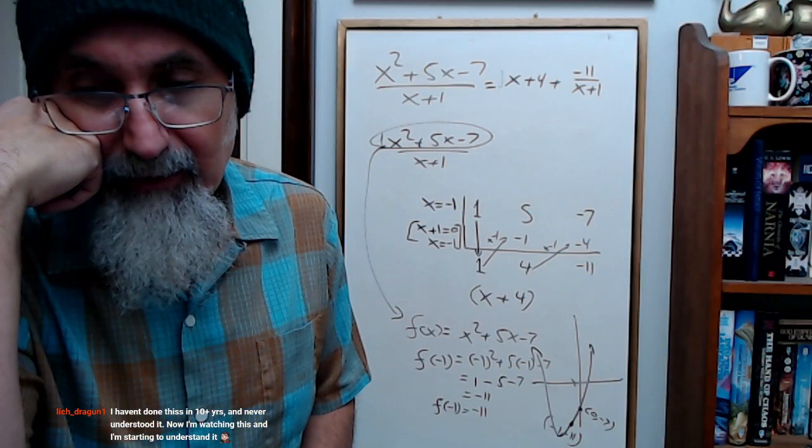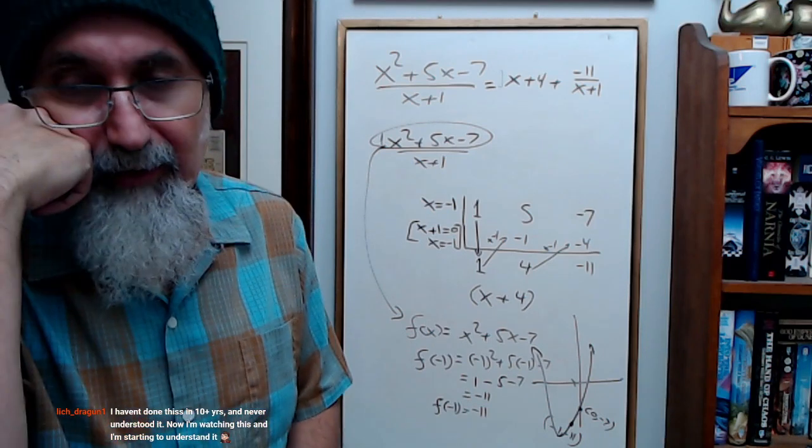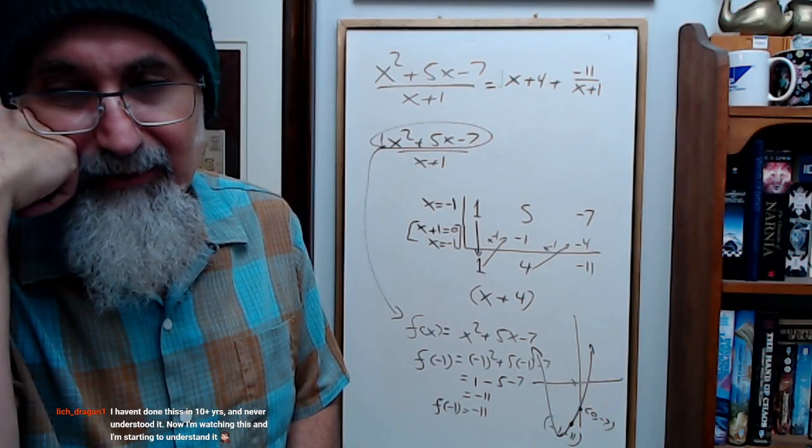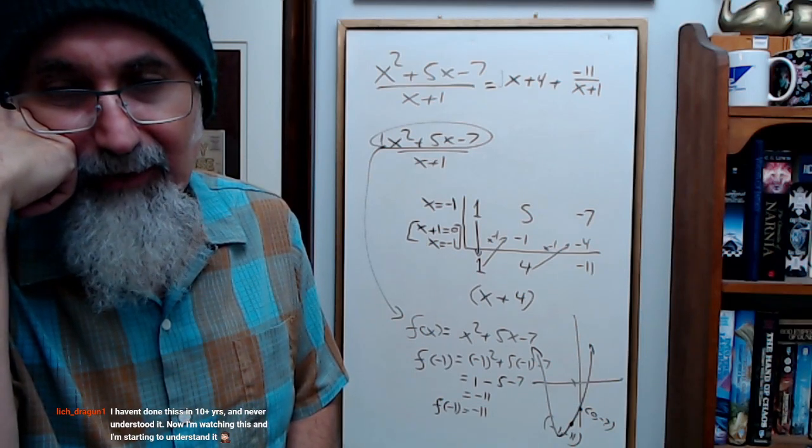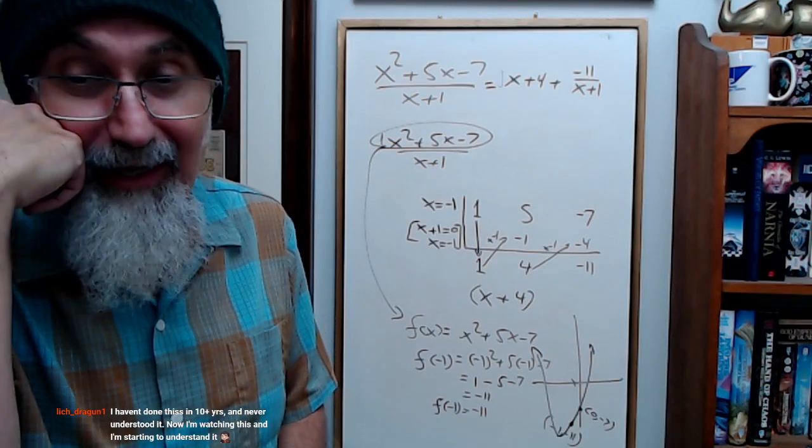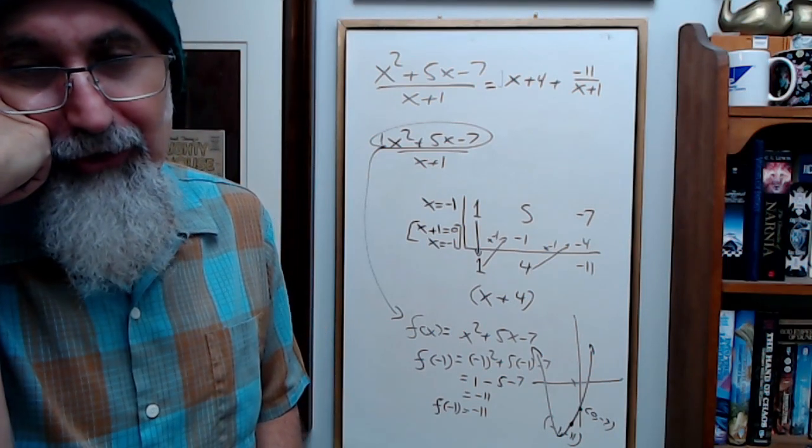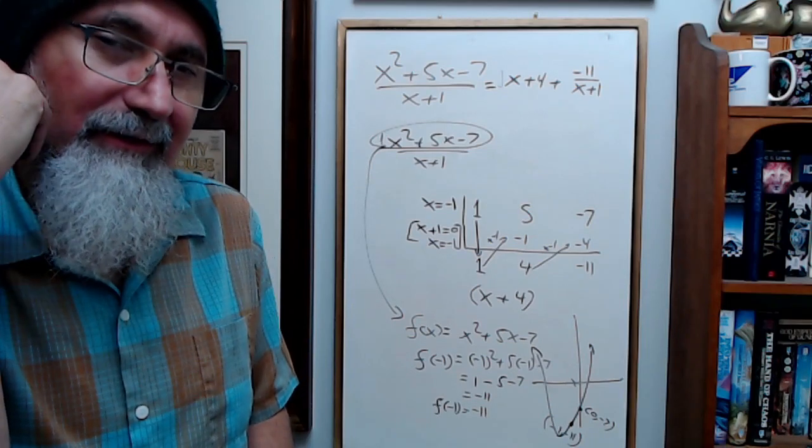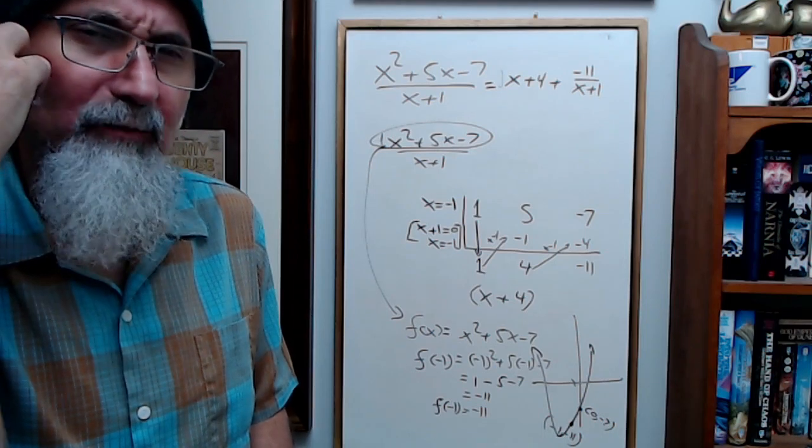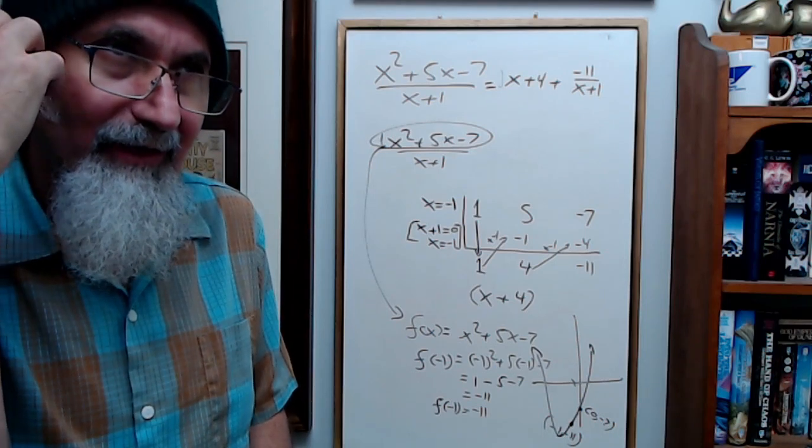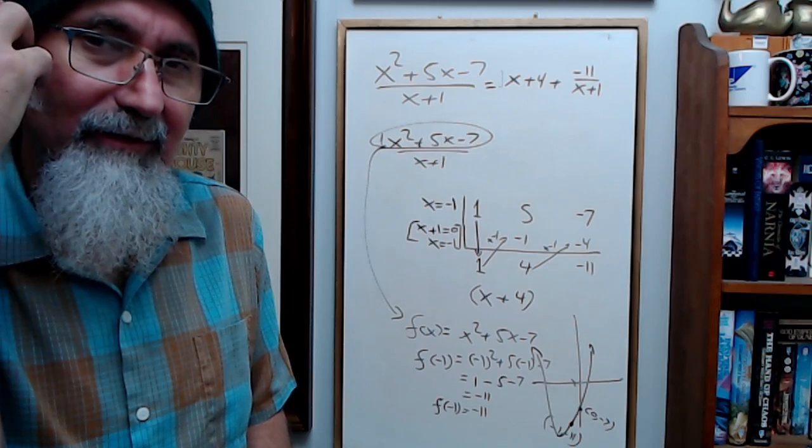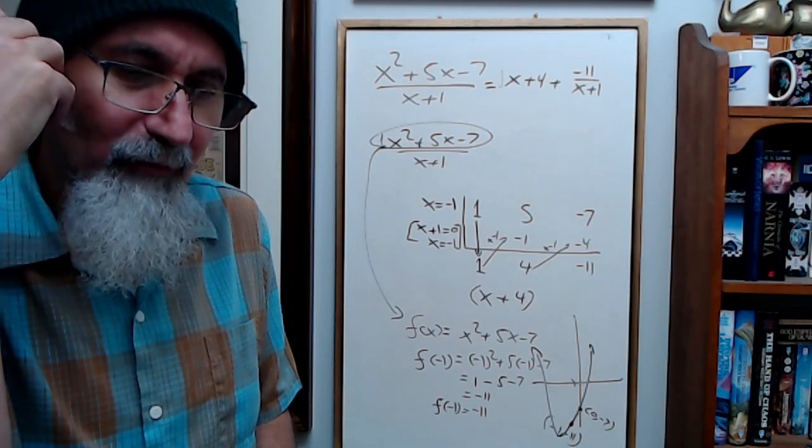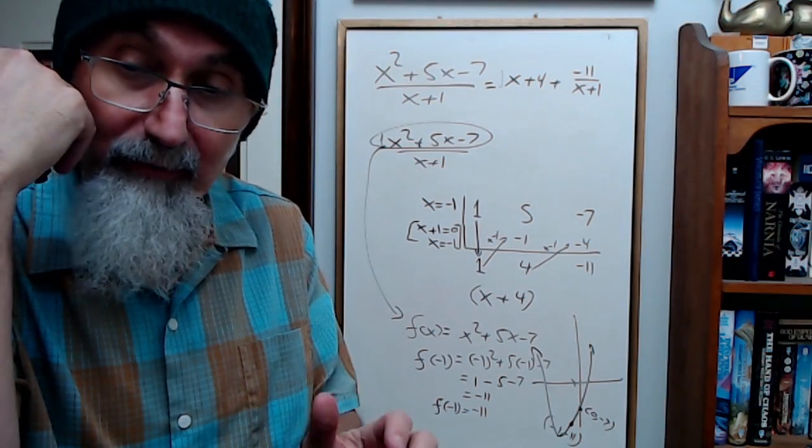I haven't done this in 10 plus years and never understood it. Now I'm watching this and I'm starting to understand it. Nice. And that's what happens, Dragon Lich Dragon, after the fact. As you get older, some of the mathematics that you might have done in the past makes more sense because you have a logical sort of life experience and things may make more logical sense. That's the way it worked for me anyway.